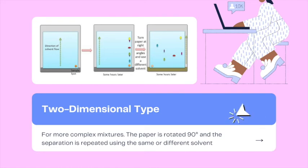In this technique, a square or rectangular paper is used. The sample is applied to one of the corners. The second development is performed at right angle to the direction of the first run. This type of chromatography can be carried out with identical solvent systems in both the directions or by two solvent systems.